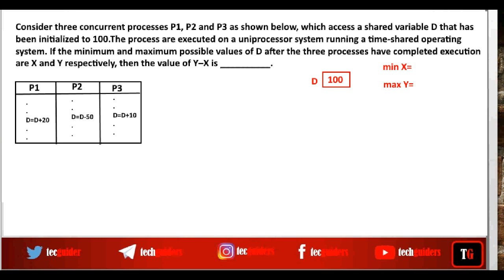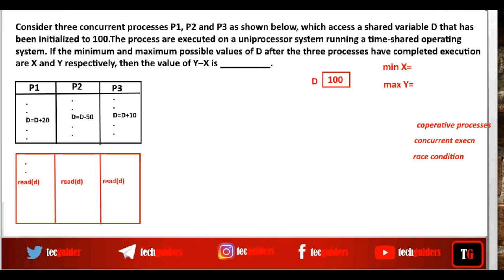Since P1, P2, and P3 are accessing a shared variable d, they are interdependent or cooperative processes. When cooperative processes execute concurrently, there is a chance for a race condition. Here on a uniprocessor time-shared system, each arithmetic statement involves a set of operations — reading the value from d, performing the calculation, and writing the value back to d — and they are not atomic.